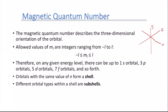For N=1, the angular quantum number is 0, so M sub L can only equal 0. For N=2, we have L values of 1 and 0. For L=1, M sub L can be negative 1, 0, or positive 1 — giving three different magnetic quantum numbers and three different orientations for the p orbital.